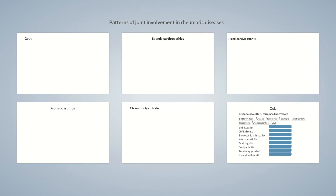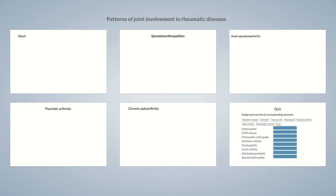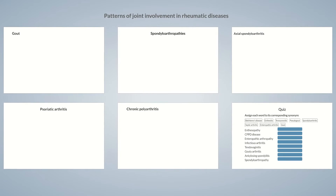Patterns of Joint Involvement in Rheumatic Diseases. Are you curious about the joint involvement pattern of the most important arthropathies in adults? In the last part of this series, we'll be looking at monoarthritis, oligoarthritis, and polyarthritis in adults.